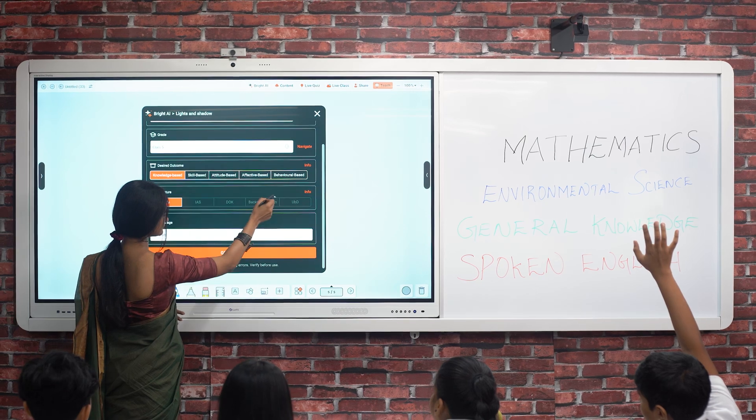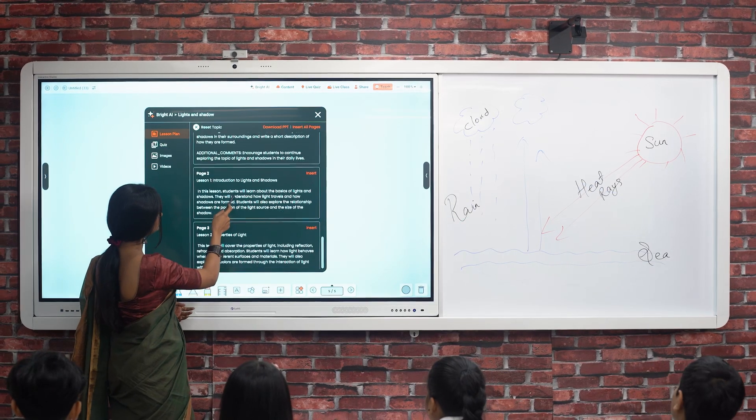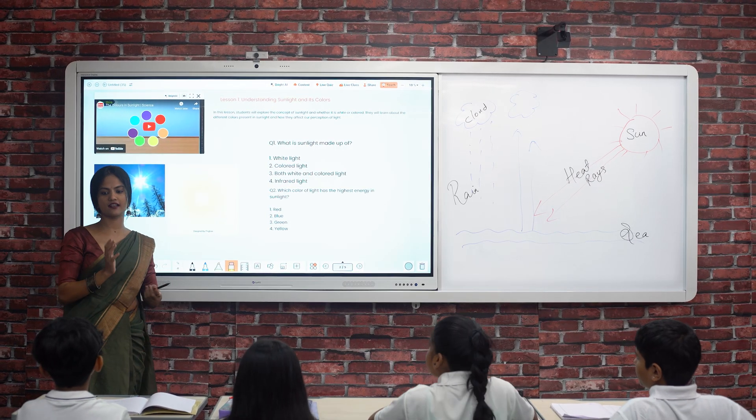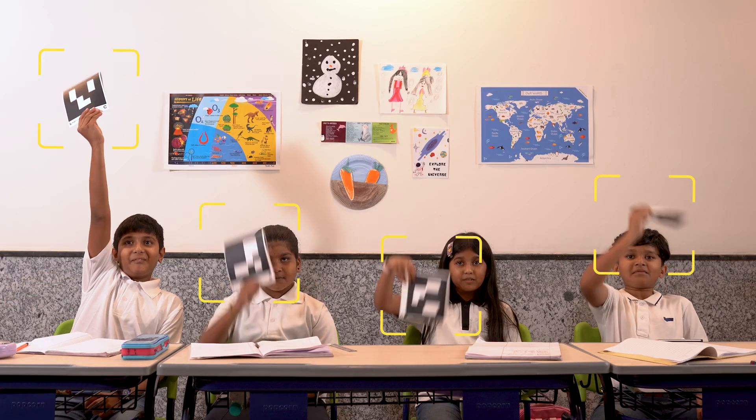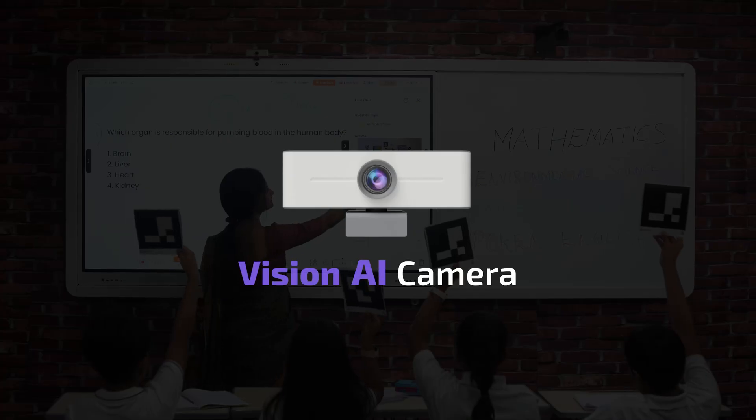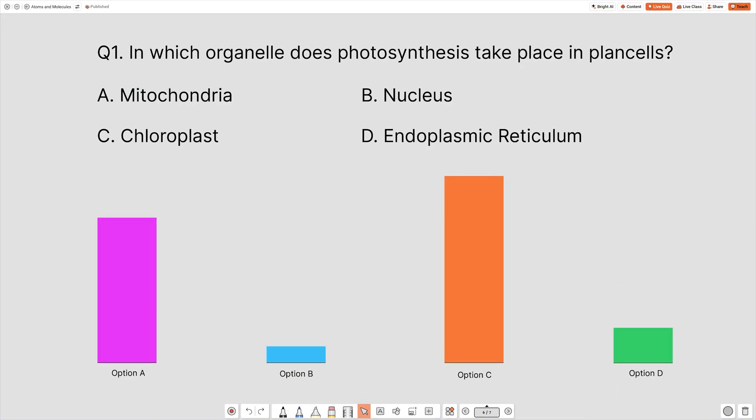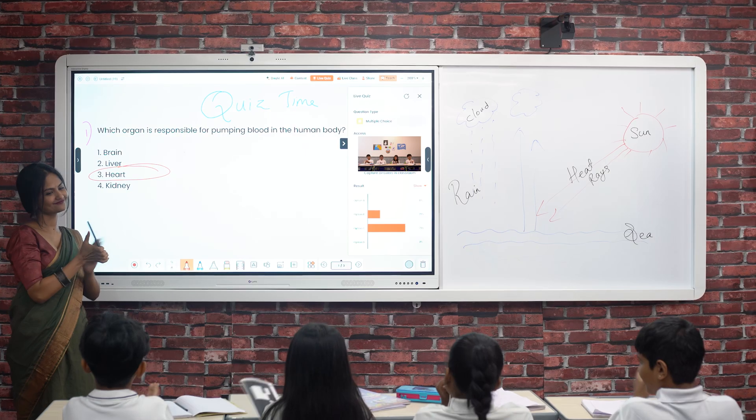With AI, content on any topic can be generated in seconds, providing greater flexibility in teaching. To boost student engagement, real-time polling and quizzes can be conducted using a built-in vision AI camera, tracking the student responses and making learning more interactive and enjoyable.